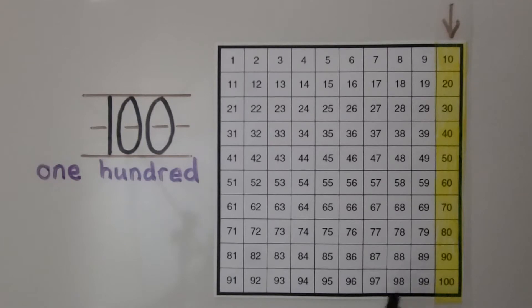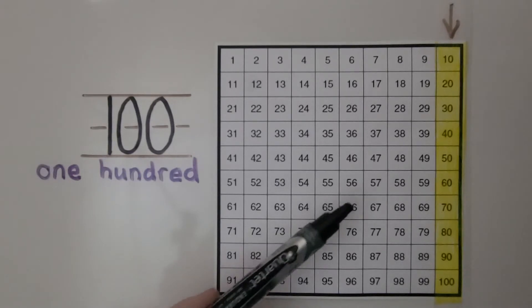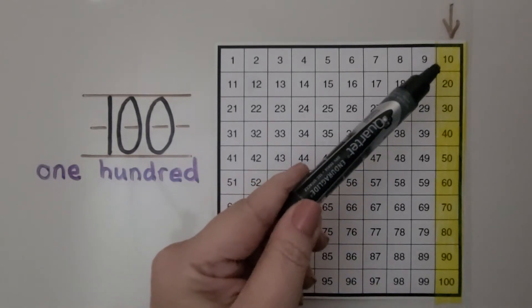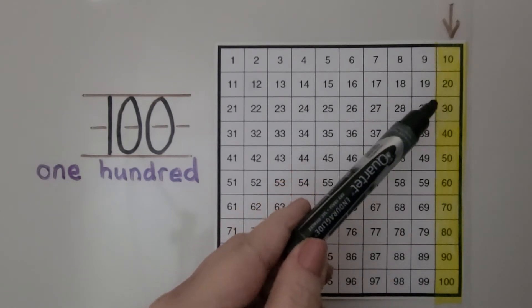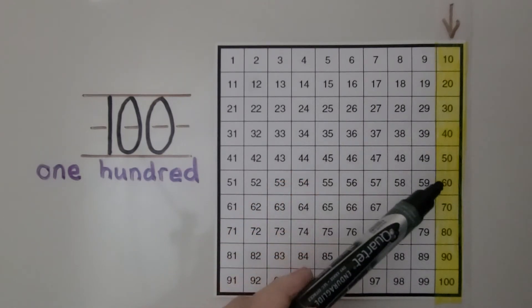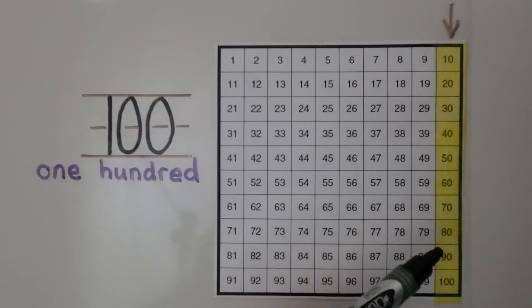This column of a hundred chart can help us skip count to 100 by tens. If you look, all the numbers end in zero. The first part of the number goes up by one each time. Look, they all end in zero, and it goes one, two, three, four, five, six, seven, eight, nine. And this is actually a ten with a zero.